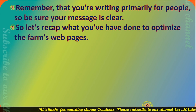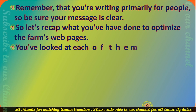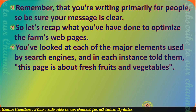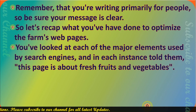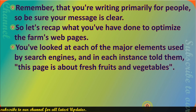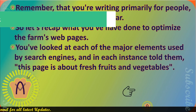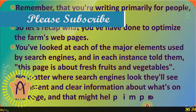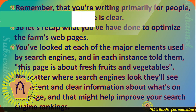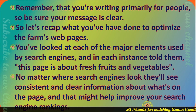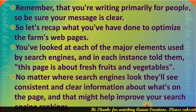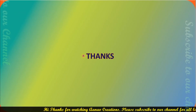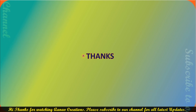Let's recap what you've done to optimize the farm's web pages. You've looked at each of the major elements used by search engines, and in each instance told them: 'This page is about fresh fruits and vegetables.' No matter where a search engine looks, it will see consistent and clear information about what's on the page — and that might help improve your search engine rankings.